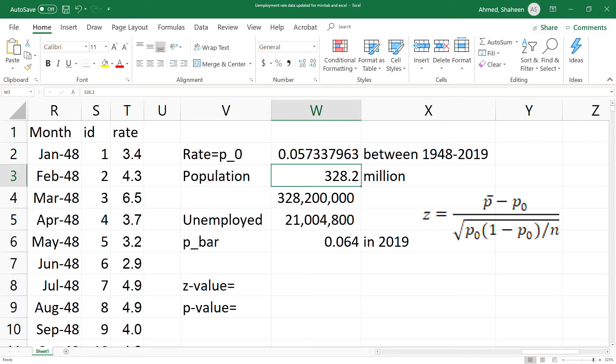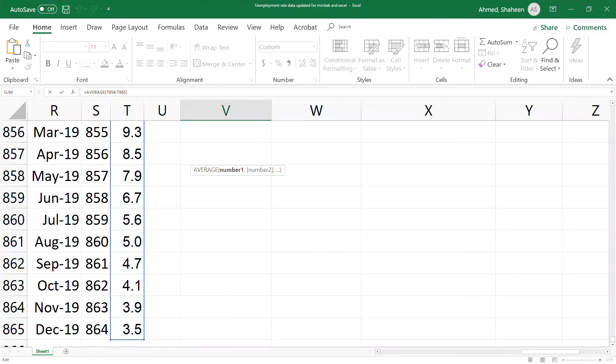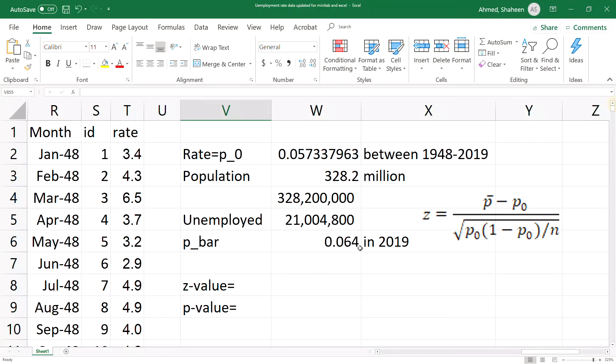If the research question is whether the unemployment rate in 2019 was significantly higher, which is 6.4 percent if you average those 12 months, is that statistically higher than the historic rate? If that is the research question and we try to find that answer, then we can use this proportion test to statistically see whether 6.4 percent is statistically higher than 5.7 percent.